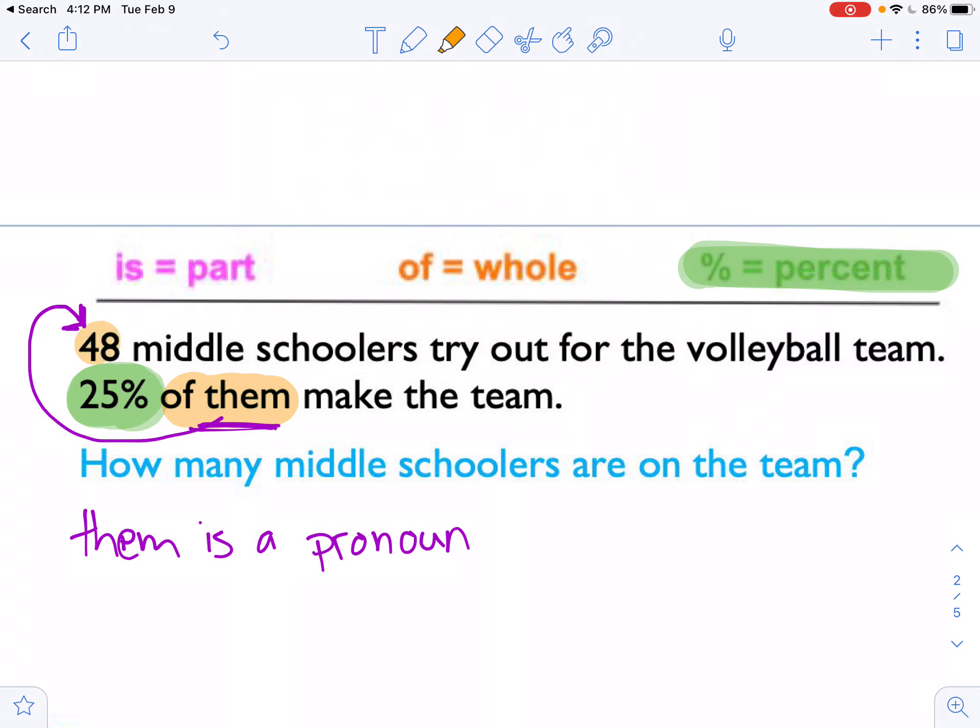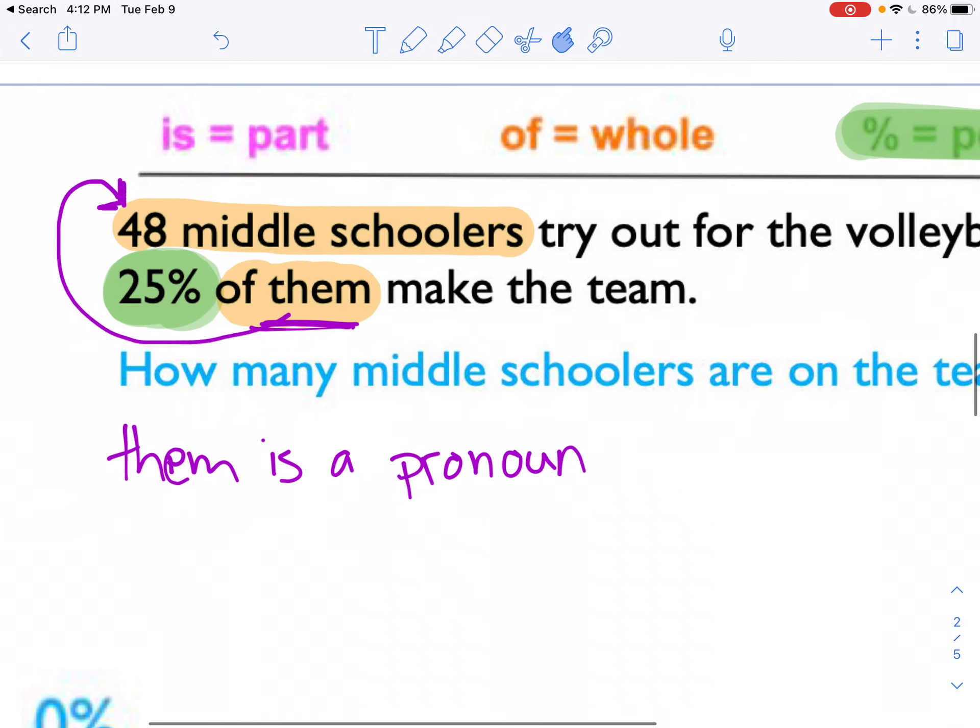This sentence is about the 48 middle schoolers. This is the them. This is the whole. It's not 48 whole middle schoolers. It's the whole group that tried out for the team. So I'm going to write that down too. Whole group was 48 students.